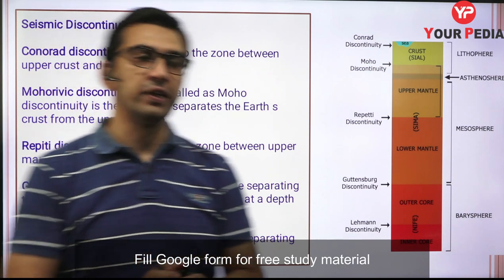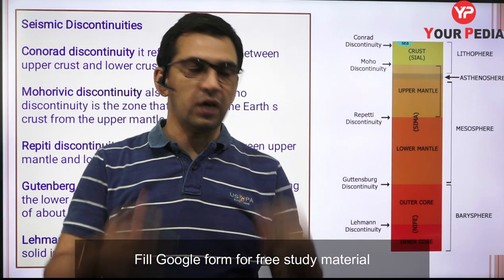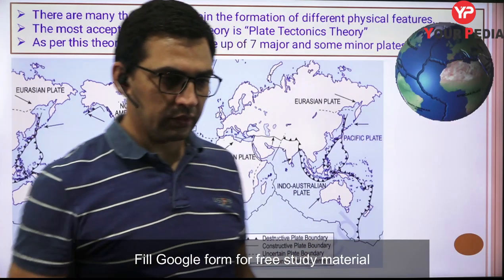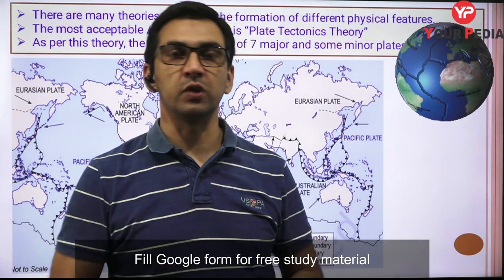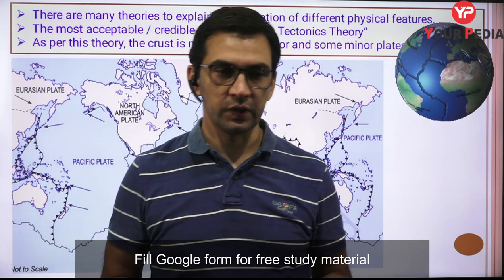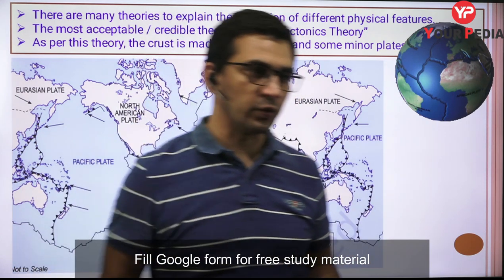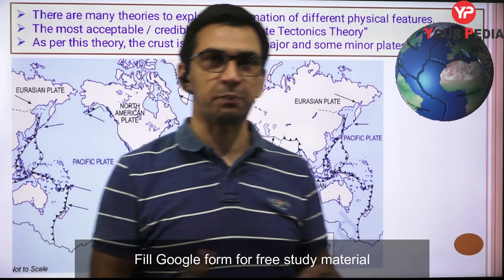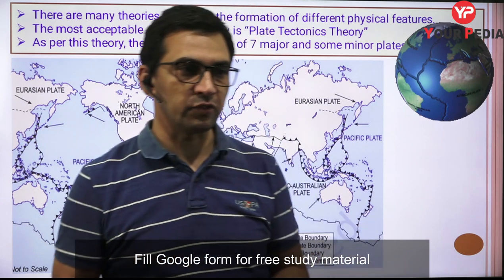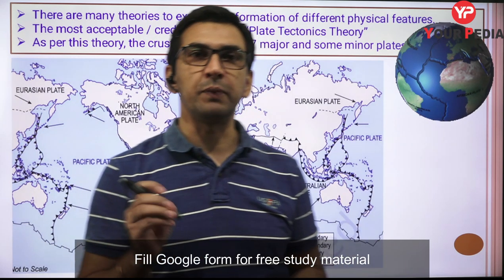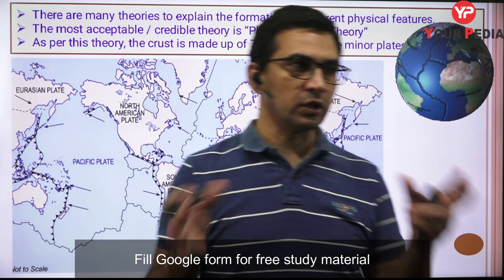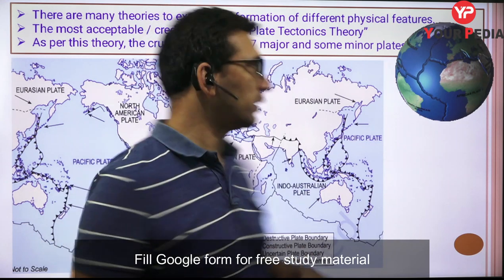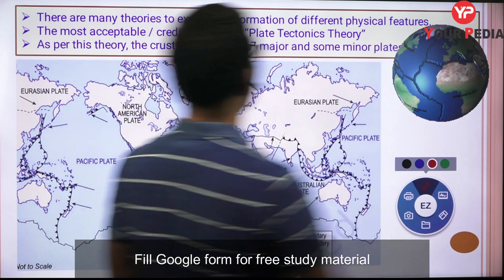Now since we have an overall idea of the earth's internal structure, we can move to discuss how internal processes lead to the formation of different kinds of landforms on the surface of the earth. Different theorists and scientists have tried to explain this. The most credible and widely accepted theory today is called the Plate Tectonics Theory. This theory helps us understand the mechanism behind the formation of landforms on the surface of the earth.